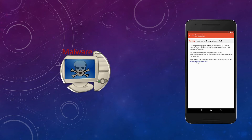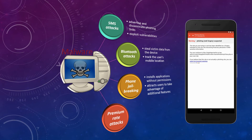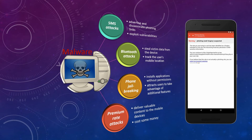We focus on four main attacks: SMS attacks, Bluetooth attacks, phone jailbreaking, and premium rate attacks. In SMS attacks, an attacker can advertise and disseminate phishing links that can be used to exploit vulnerabilities. In Bluetooth attacks, an attacker can steal victims' data and track the mobile location. With bluebugging, an attacker can launch malicious software and listen to conversations.